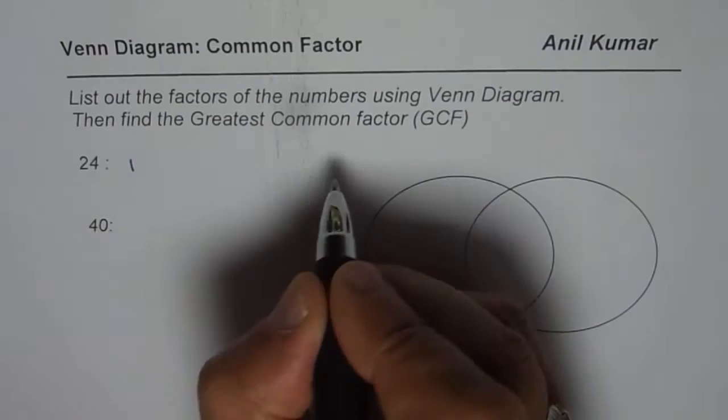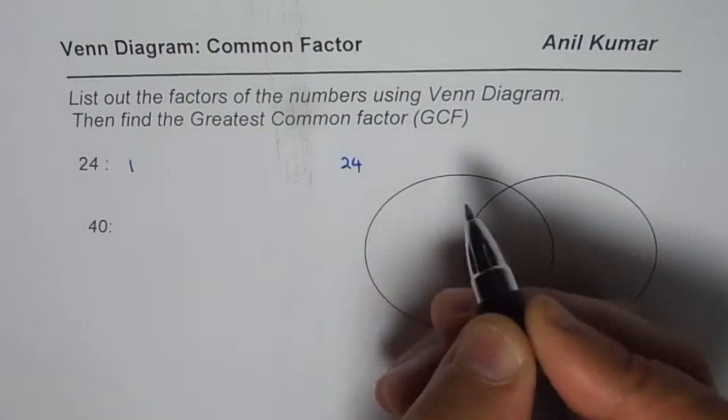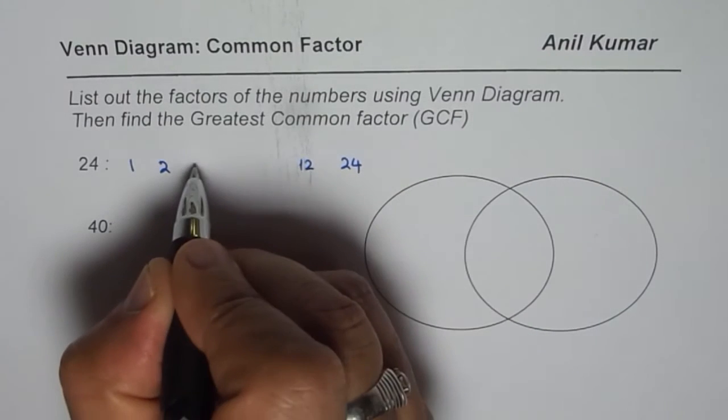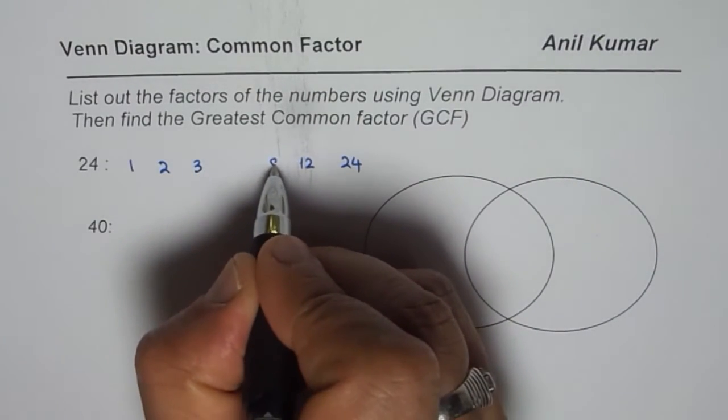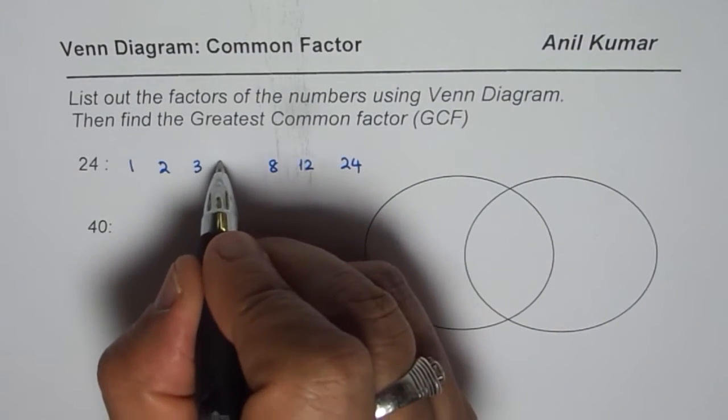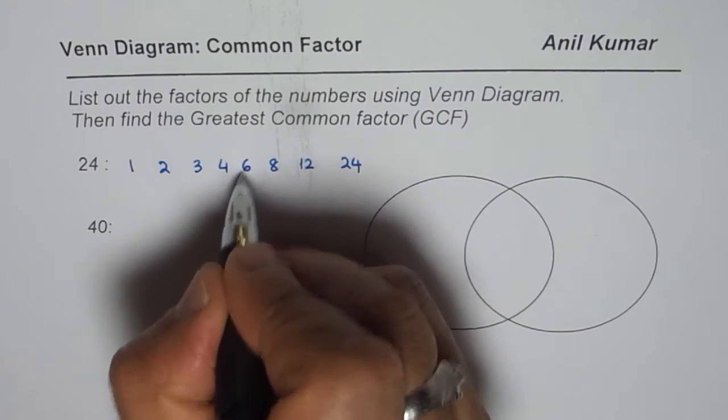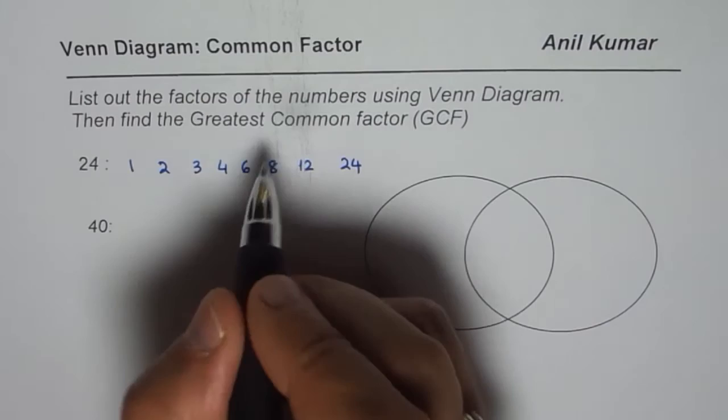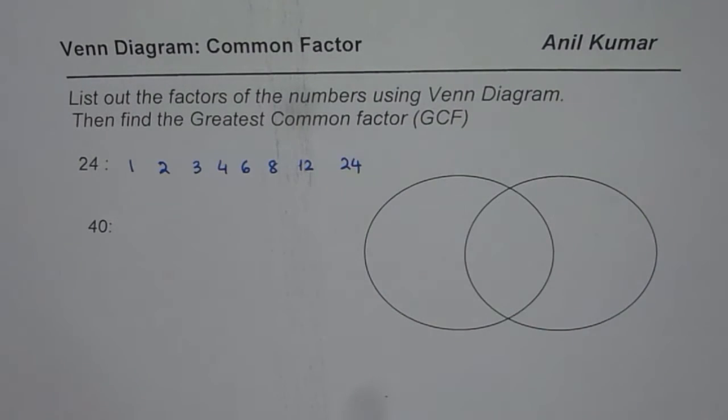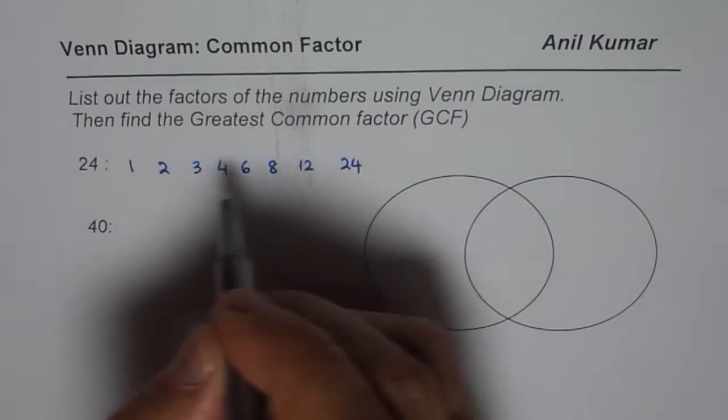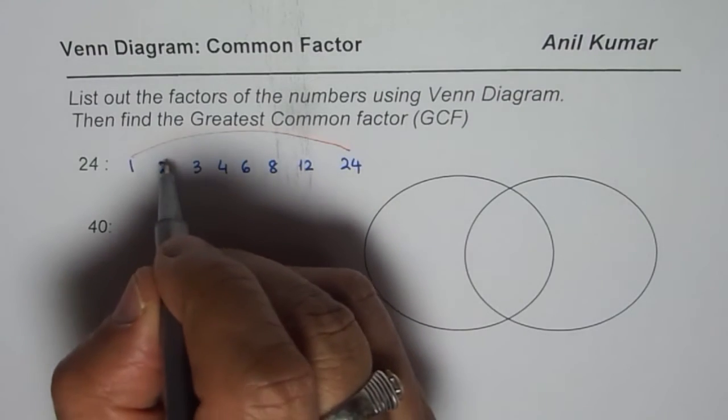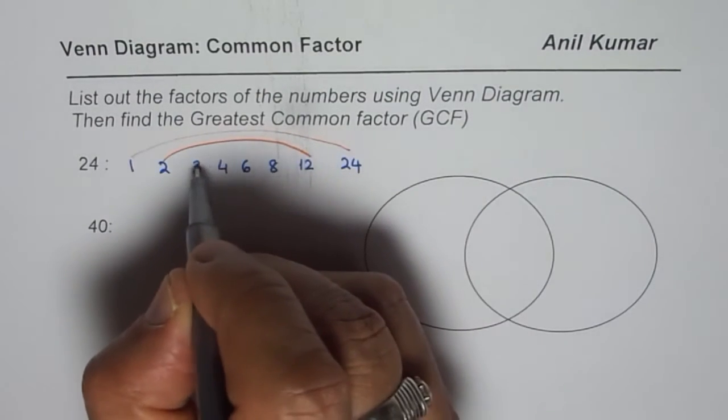1 times 24 is 24. Start with 1, 2 times 12 is 24, 3 times 8 is 24, 4 times 6 is 24, and then 8 times 3. So I think these are all the possible factors of 24. Let us connect them. I mean it's not necessary, I'm just showing you that it forms kind of a rainbow. It helps to understand and we have all the factors.